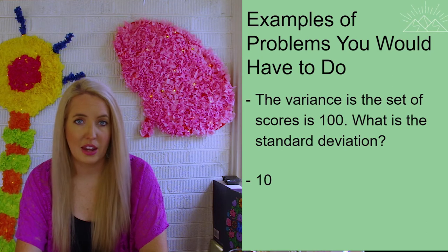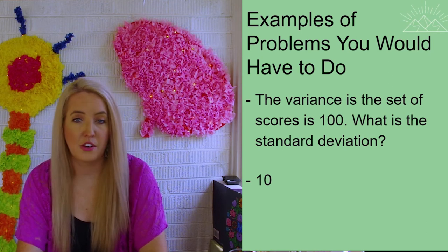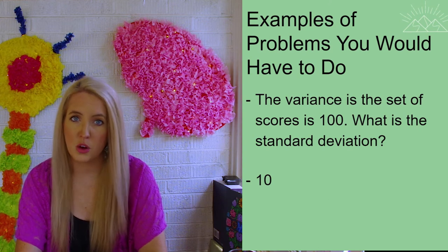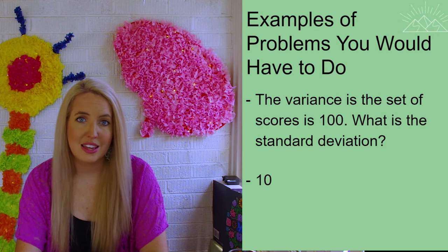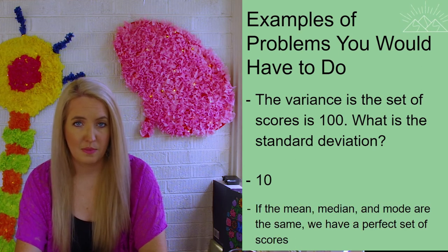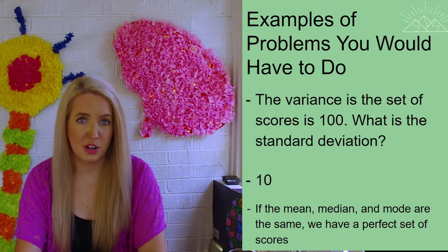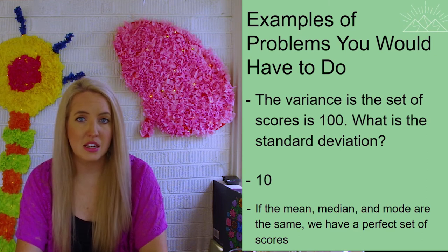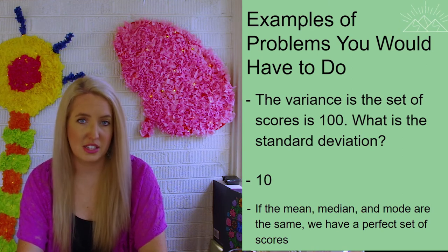Or you could be given one that is the variance is 25. What is the standard deviation? And hopefully we know that the answer is 5. So that is the extent of the math that you'd be expected to do in psychology. The numbers will always be square rootable numbers. They'll always be easy numbers for you to find the square root of in order to determine the standard deviation.